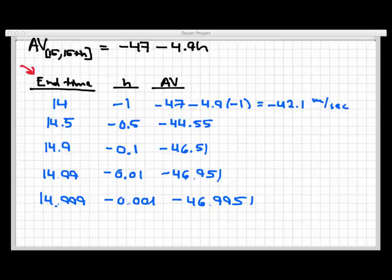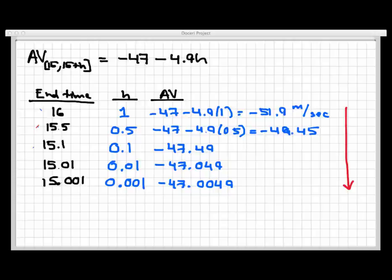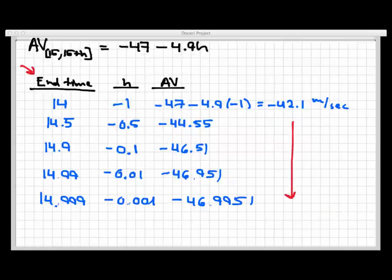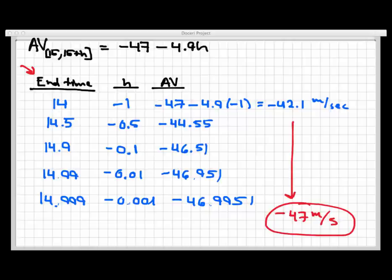Here's step three of the process: we simply observe what all of these average velocity values are doing as the time interval shrinks to zero length. In the first table, the average velocity values are clearly approaching negative 47 meters per second. And that's also true of the values when starting at 15 and moving backwards — those are also approaching negative 47 meters per second. Since the average velocities are approaching negative 47 meters per second no matter which way you approach time equals 15, we conclude that negative 47 meters per second is the instantaneous velocity of this object at time equals 15. Thanks for watching.